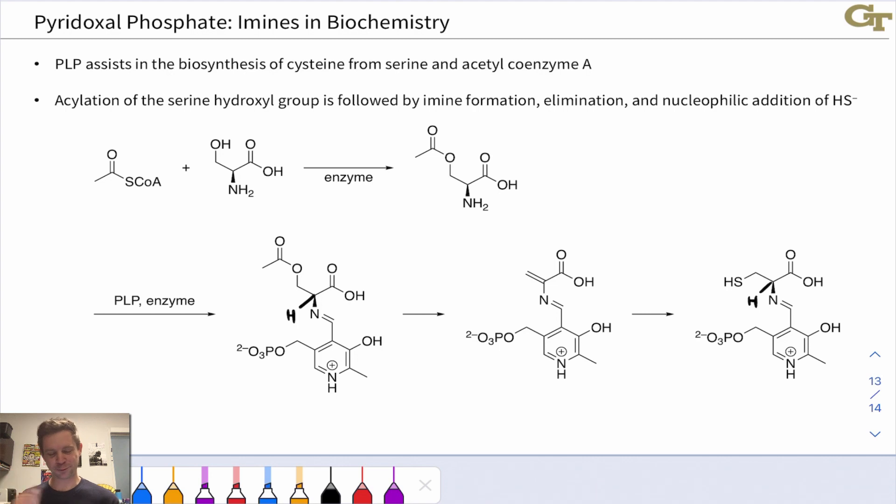I've got one more example of PLP serving a critical role in forming an imine with an NH2 group, and it involves the biosynthesis of cysteine from serine and acetyl coenzyme A. So cysteine is the amino acid with an SH—HS-CH2 group—linked to the alpha carbon of the amino acid. Serine has an OH-CH2 group, so we need something like a nucleophilic substitution of SH- for OH- to occur right there. But of course, this mechanism is not something we're going to be able to do in a biochemical system. So the way this works in biochemical systems is we first acylate the serine hydroxyl group—this is just a nucleophilic acyl substitution reaction at the end of the day—and then PLP gets involved and forms a PLP imine with that acylated serine.